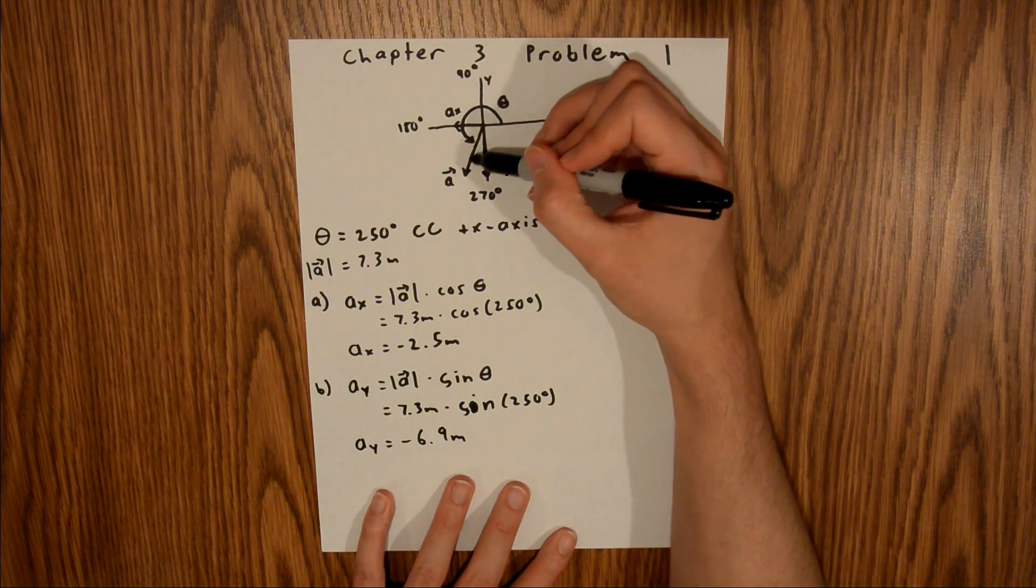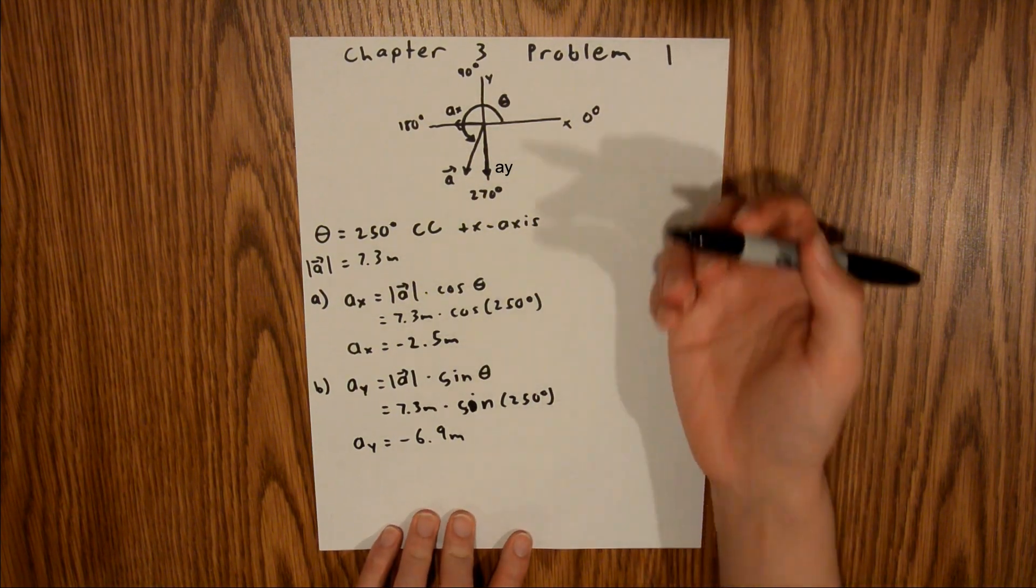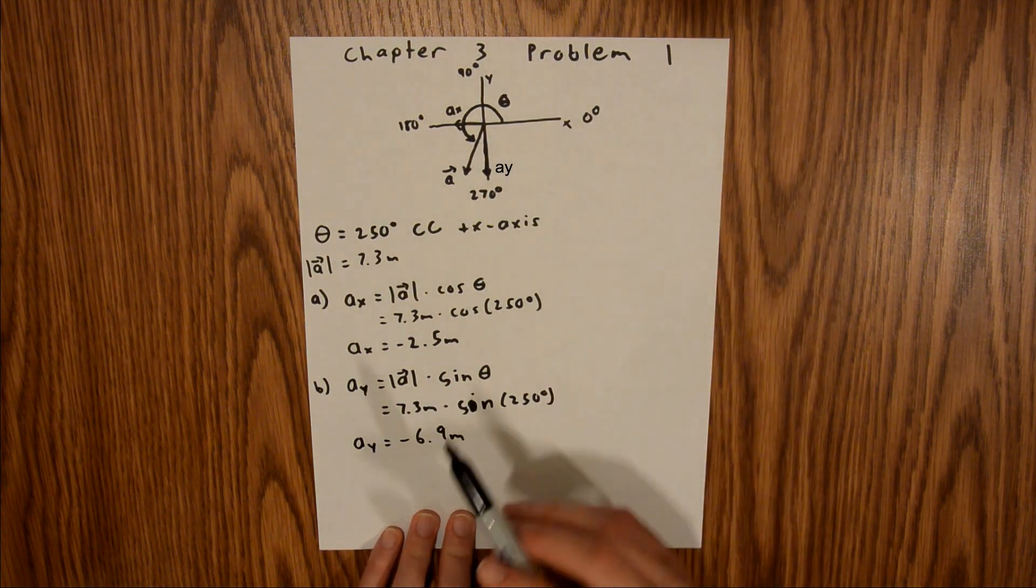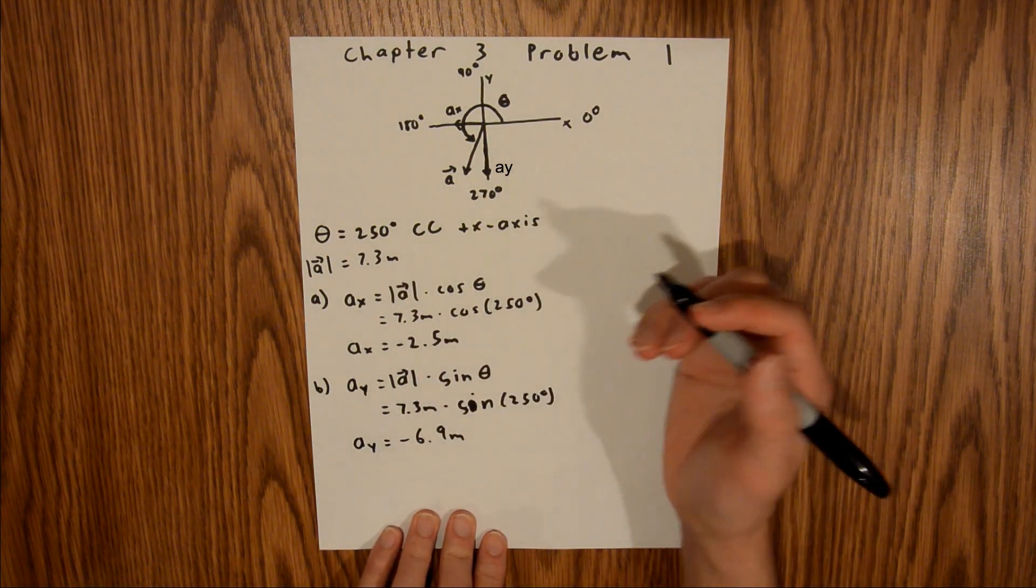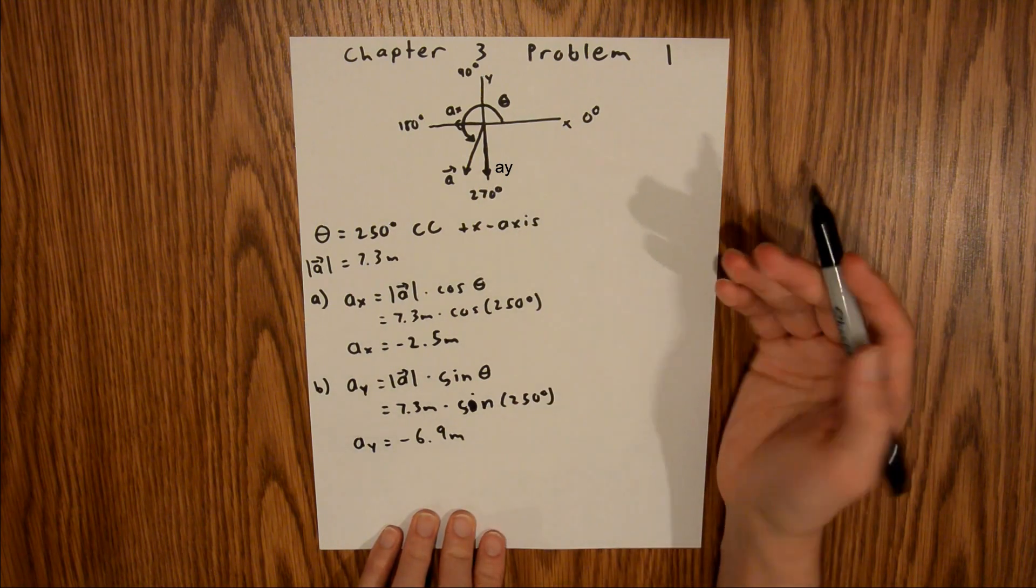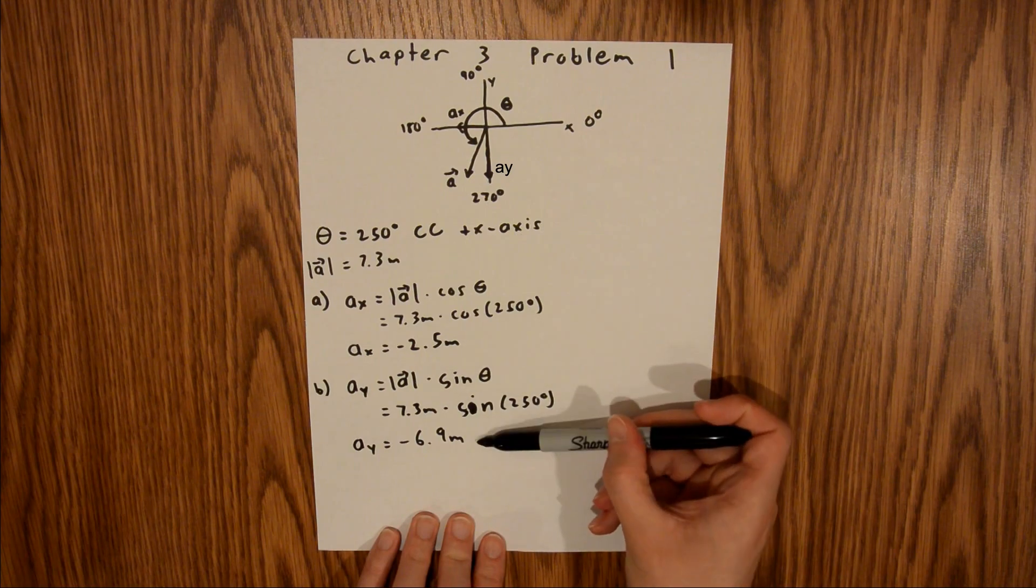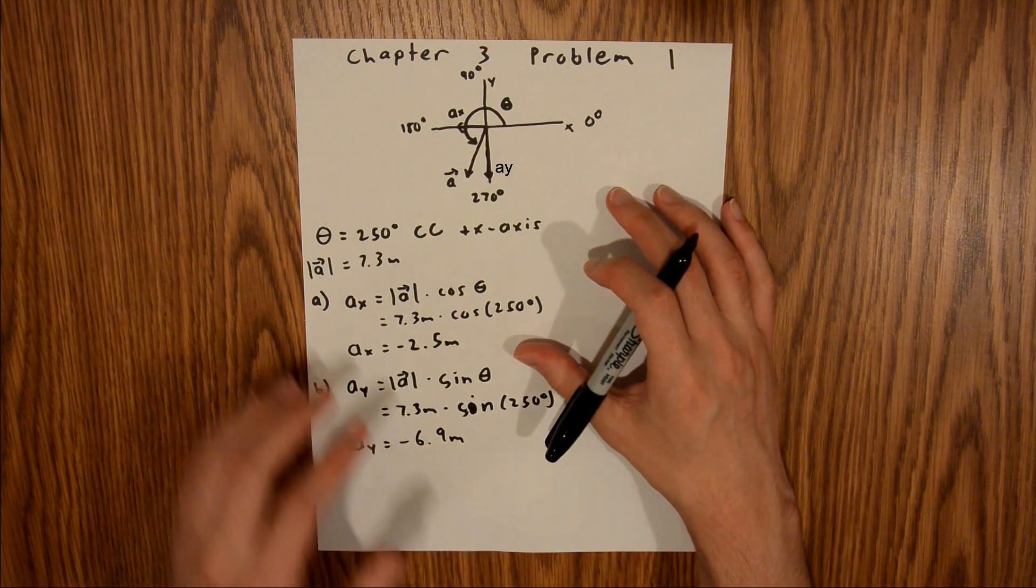And again, since this vector is mostly in the y direction, the magnitude of the y component should be pretty close to the magnitude of the actual vector. And 6.9 is close to 7.3. So all of that checks out. And this makes sense for an answer. And so these two answers right here are the final answers to this problem.